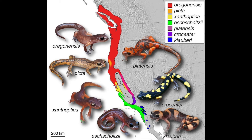Speciation happens because of isolation and natural selection. Isolation is when populations of a species are separated — this could happen for many reasons, for example an earthquake or a flood. Or a whole group of the species could move to a completely different area.